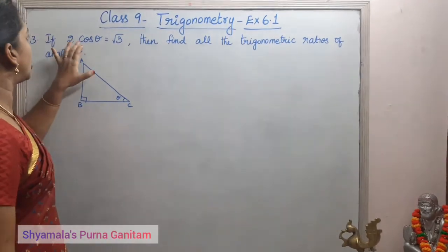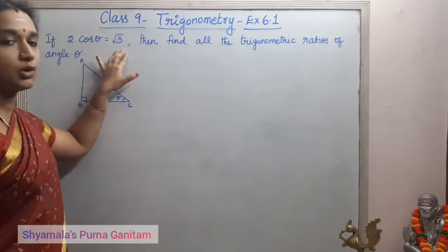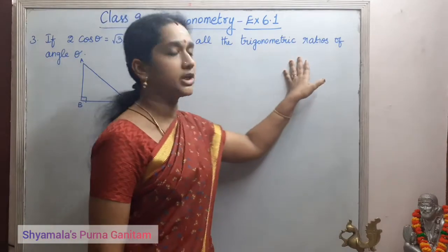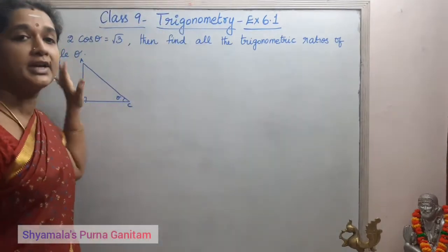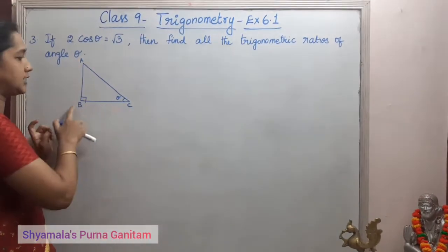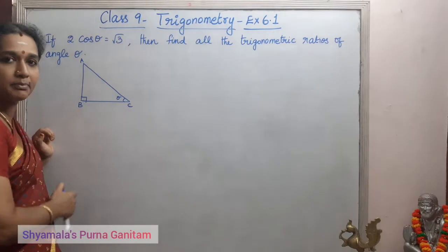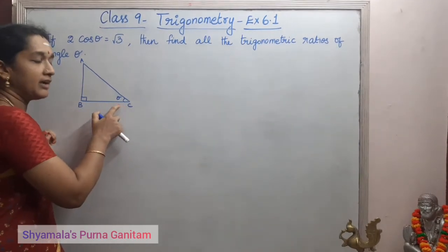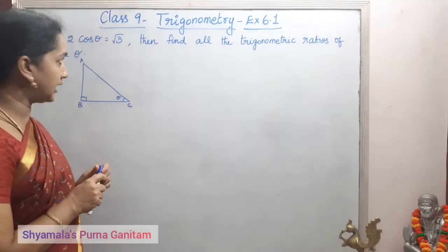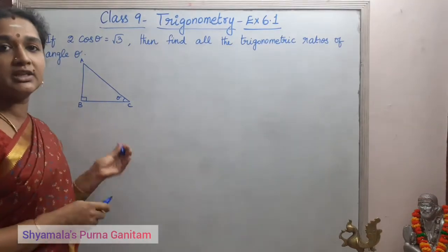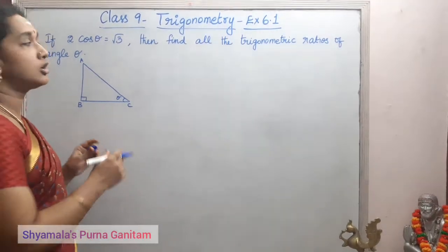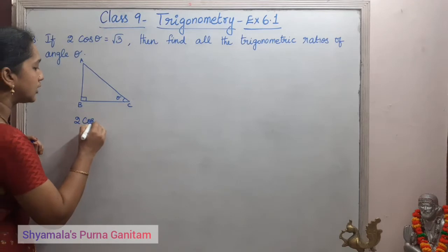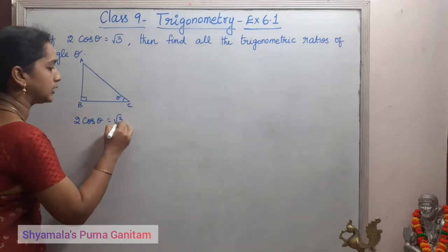Third problem: if 2cosθ is equal to √3, then find all the trigonometric ratios of angle θ. So this is a triangle ABC, right angle at B. We have angle θ at C. The question given is 2cosθ is equal to √3.